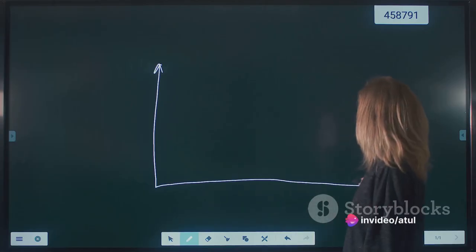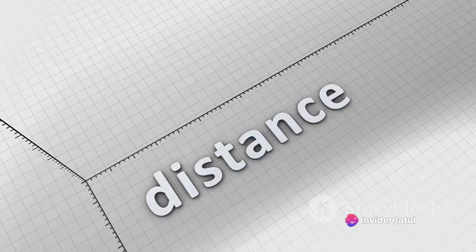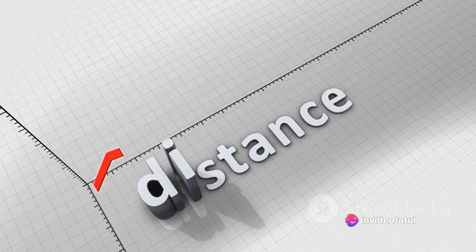This line is called the line of best fit, or regression line. How do we find this line? By minimizing the distance between the line and all the data points. This distance is often referred to as the error.